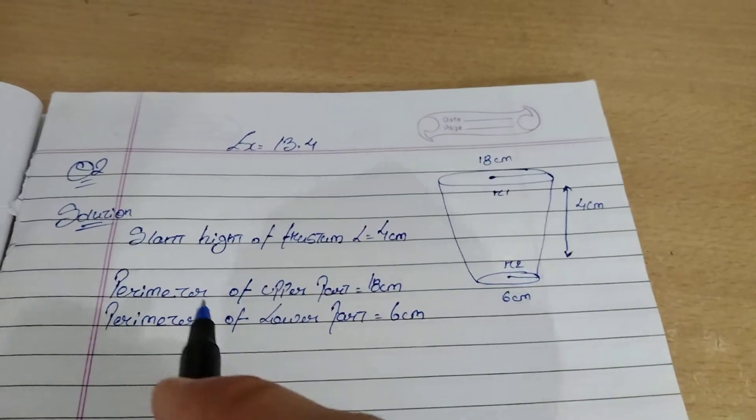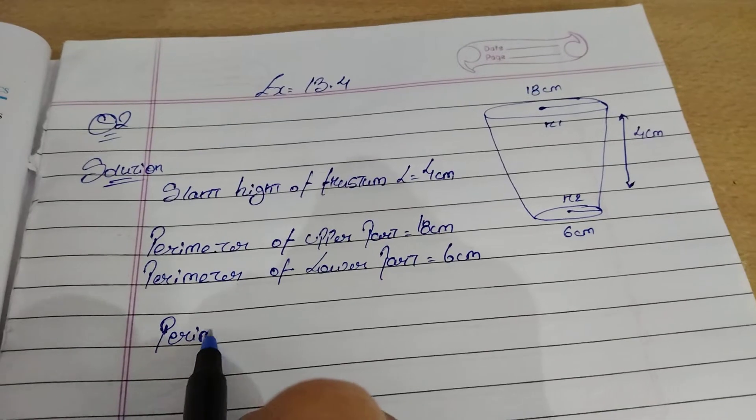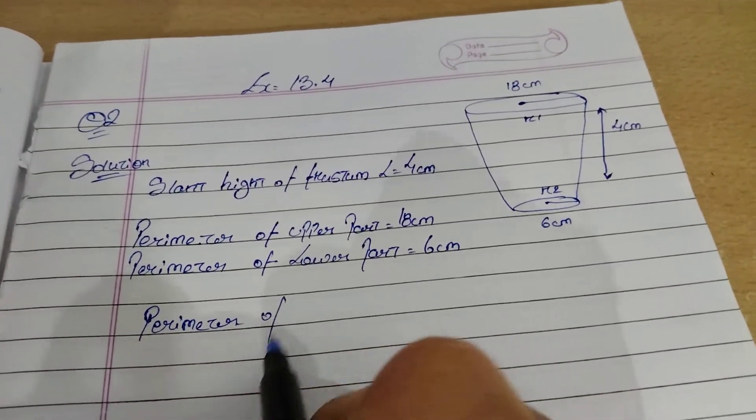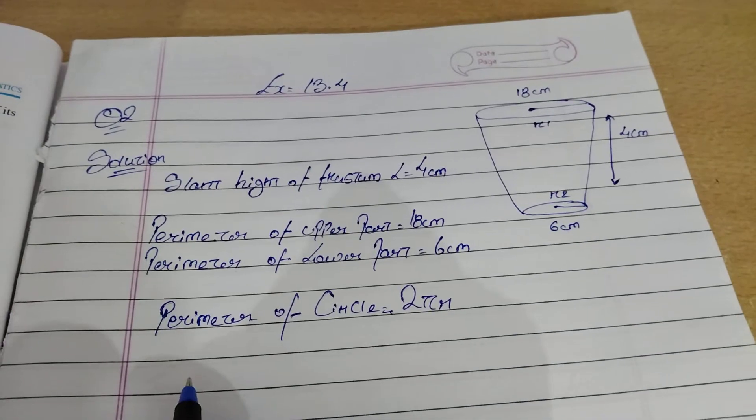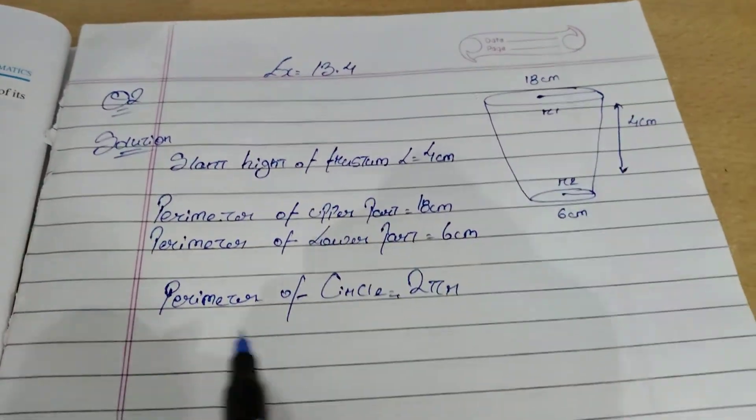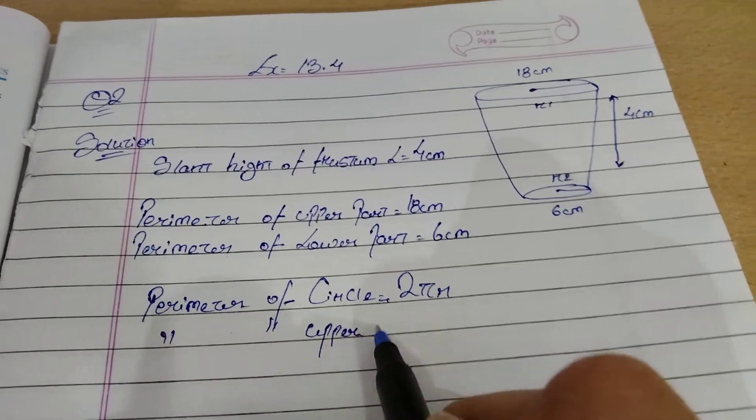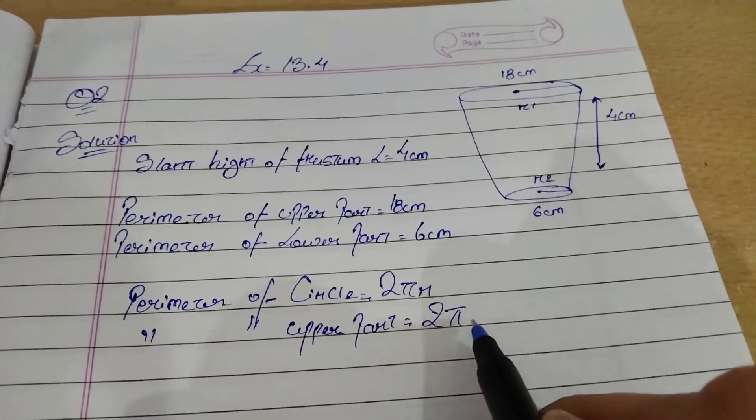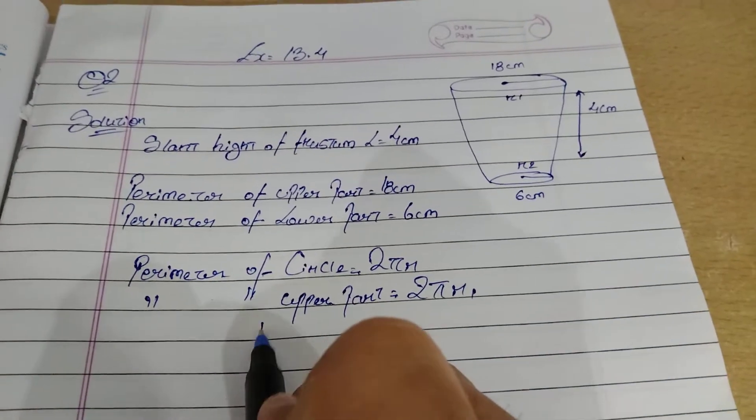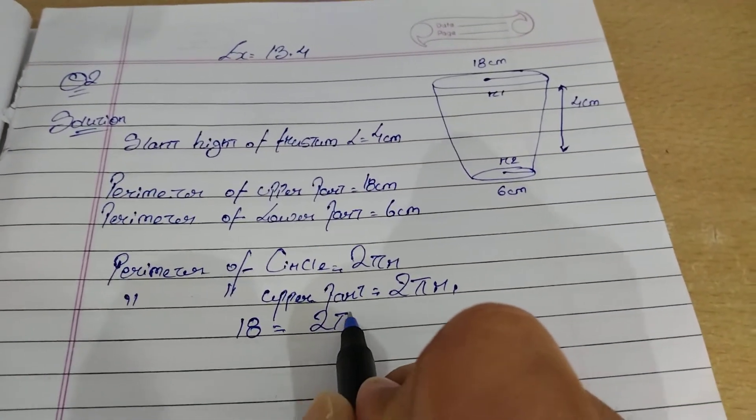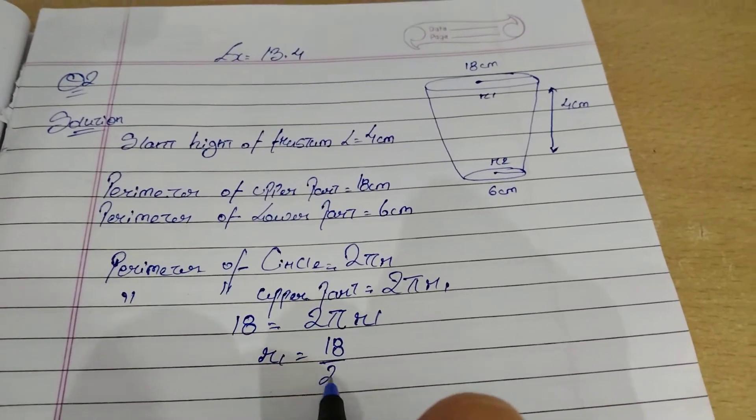Next step we are going to use the formula. The perimeter of circle formula is 2πr. We are going to find perimeter of upper, so it will be radius 1. For the upper one we have perimeter as 18 equals to 2πr1. If you bring r1 here, then we have 18 by 2π. Cancel it, so remaining will be 9 by π, so r1 is 9/π.